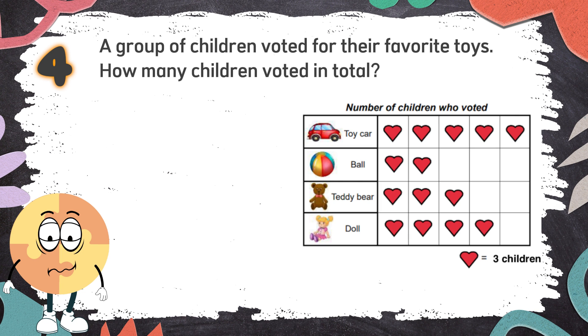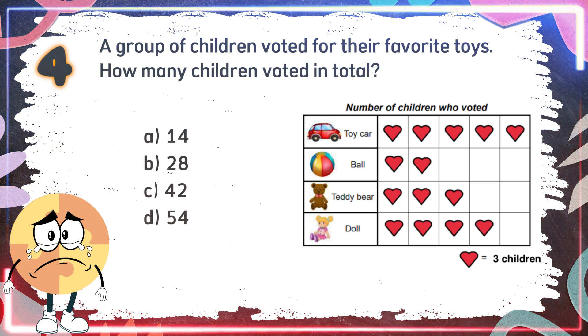Number 4: A group of children voted for their favorite toys. How many children voted in total? The choices are A, 14, B, 28, C, 42, D, 54.